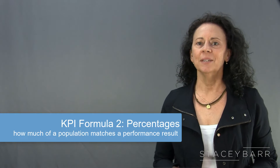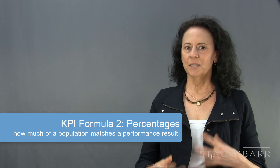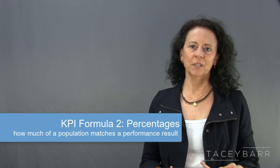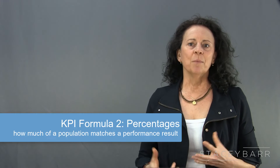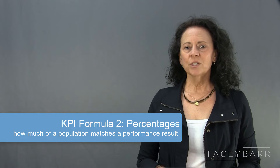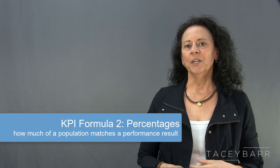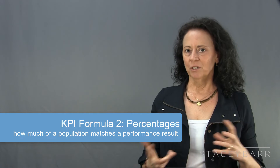Basic KPI formula number two is the percentage. Percentages are counts of the number of things or people in a population that exhibit a particular performance feature, divided by the total population size then multiplied by 100. For example: the percentage of customers who are satisfied, the percentage of employees that were injured at work, the percentage of sales calls that resulted in a sale, or the percentage of processes that are fully automated. Percentages are great when you're interested in how much of a target population matches your performance result. But percentages assume your result is black or white — either customers are satisfied or they aren't — and they don't tell you the degree or the extent, like how satisfied or how injured.